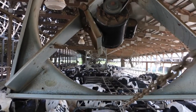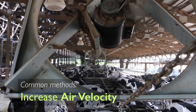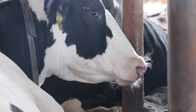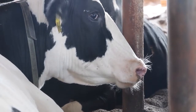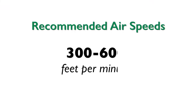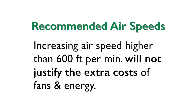Another commonly used method to cool animals is to increase the air velocity, or air speed, moving past them. This helps increase both convective and evaporative cooling. Usually air speeds between 300 and 600 feet per minute are recommended. Increasing air speed any higher than that will not improve the cooling enough to justify the extra costs of additional fans and energy used.